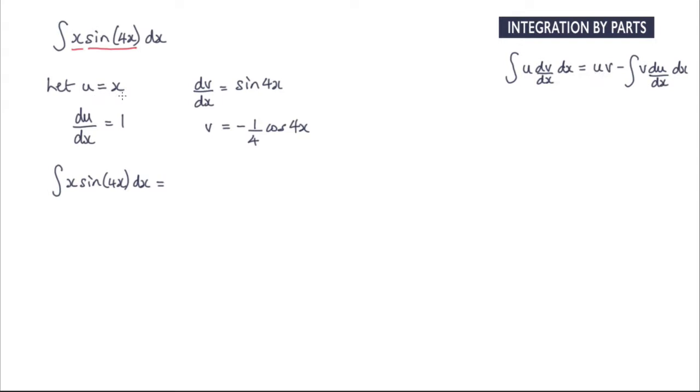So u is x multiplied by this here. That would be negative x over 4 cos of 4x minus the integral of v times du by dx.